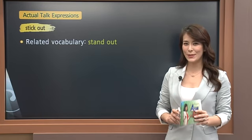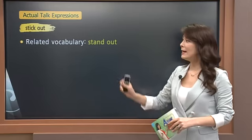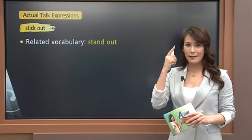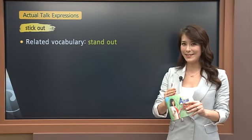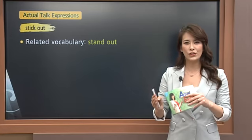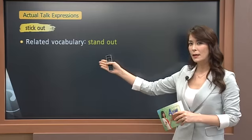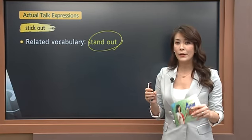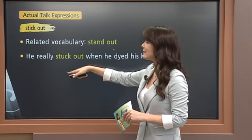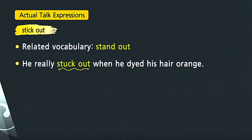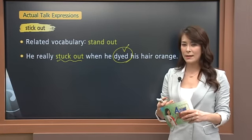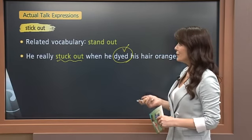Now let's take a look at some expressions you can make use of directly from the Actual Talk. Let's look at 'stick out.' Peter said 'this guy stuck out in my mind.' To stick out means to protrude, to stand out, to catch one's attention — especially because he, she, or it is very different from everyone else or everything else. A related vocabulary word is 'stand out,' which means to be seen very clearly. He really stuck out when he dyed his hair orange — that's how you can use stick out or stand out.